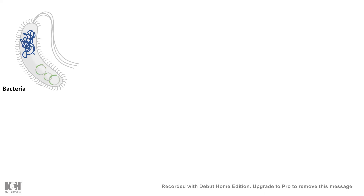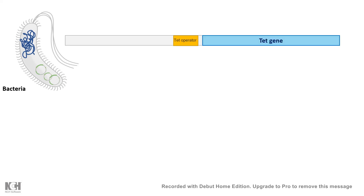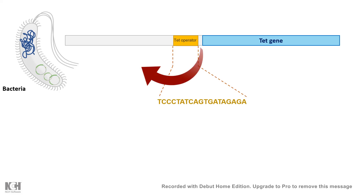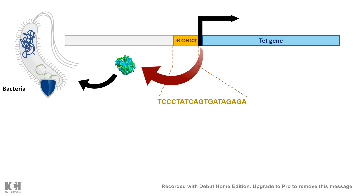Tetracycline-resistant bacteria have a tetracycline resistance gene — let's call it the tet gene — and this gene is under a tet operator. This gene ultimately gives rise to a protein that pumps out the antibiotic outside the cell, creating resistance against the antibiotic. However, this system is not always required — it is only needed when tetracycline or antibiotic is present in the environment.